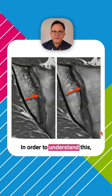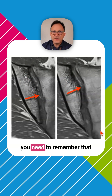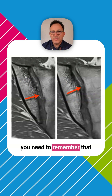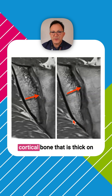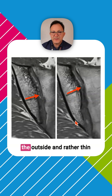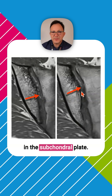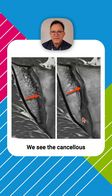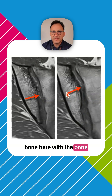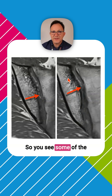In order to understand this, you need to remember that the bone consists of the cortical bone that is thick on the outside and rather thin in the subchondral plate. We see the cancellous bone here with the bone marrow in between.